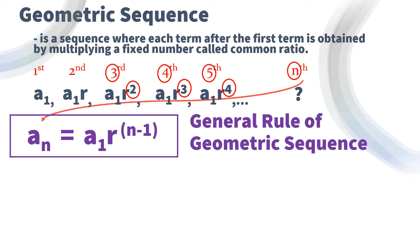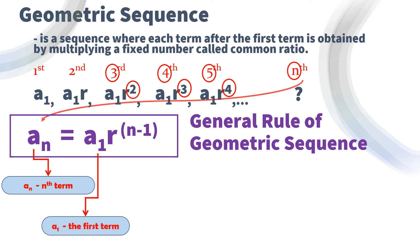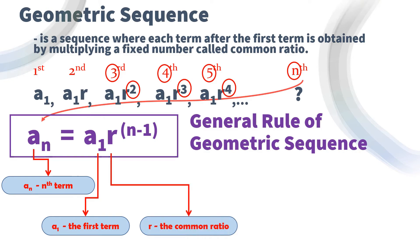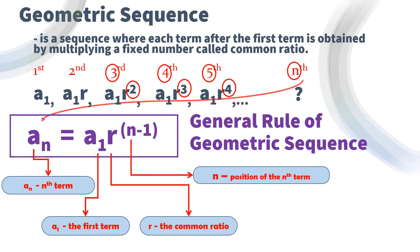So therefore, this will be our general rule for geometric sequence: a sub n equals a sub 1 times r raised to n minus 1. Where a sub n is the nth term, a sub 1 is the first term, r is the common ratio, and n is the position of the nth term. There you have it — the general rule of geometric sequence: a sub n equals a sub 1 times r raised to n minus 1.